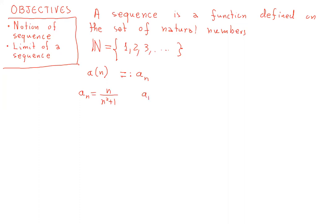And that means that we would have a1 is 1 over 1 squared plus 1, which is 2. a2 is equal to 2 over 2 squared plus 1, which is 5. a3 is 3 over 3 squared plus 1, which is 10. a4 is 4 over 4 squared plus 1, which is 17, and so on.